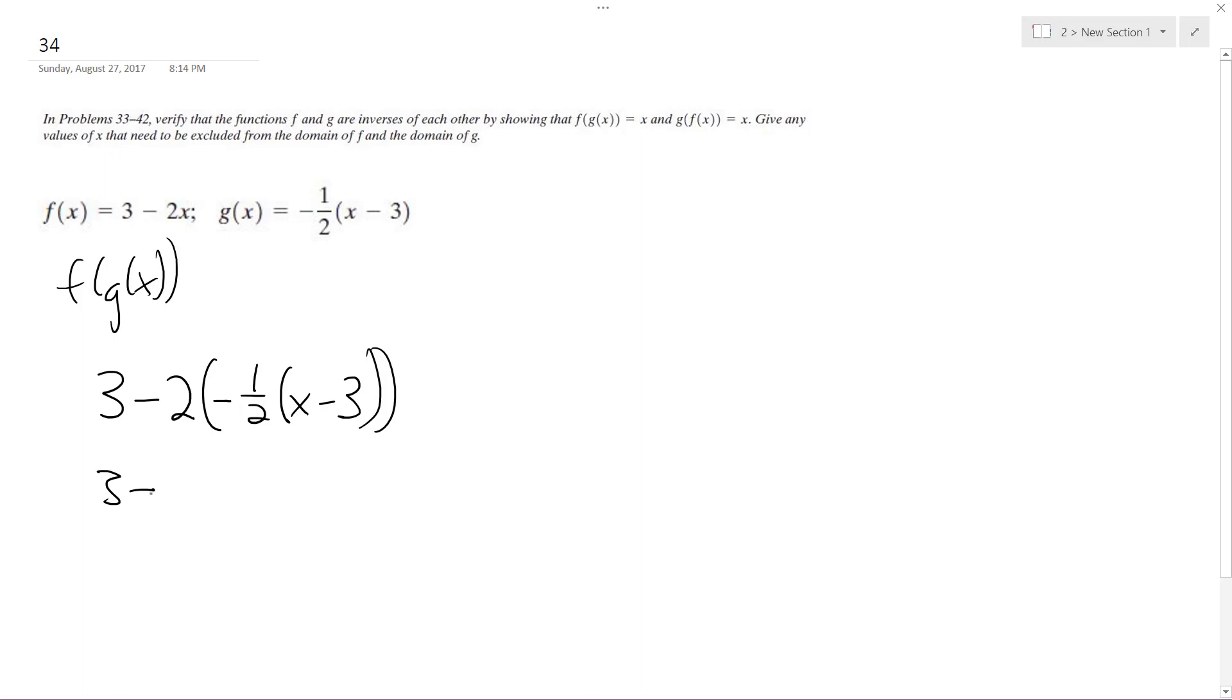I'm going to distribute the negative 2, so what I end up with is actually negative 1 half times negative 2 gives me 1, so it's just x minus 3. So I get 3 plus x minus 3. The 3's cancel out, and we're just left with x.